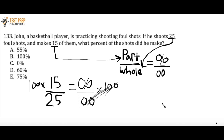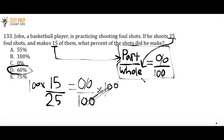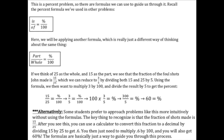If you said to yourself all you have to do is divide 15 by 25 and multiply by 100, and you knew how to do that without the formula, then you did a great job. But if not, know that this formula is a perfectly valid way to do this. I would recommend memorizing this formula and using it for percent questions. I also have another formula — 'is over of equals percent over 100.' The written solution shows a different way to think of this question, so find what works for you.